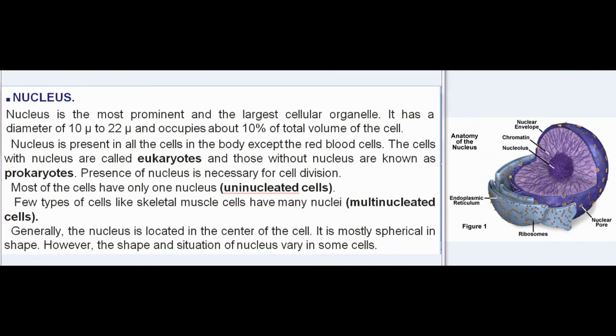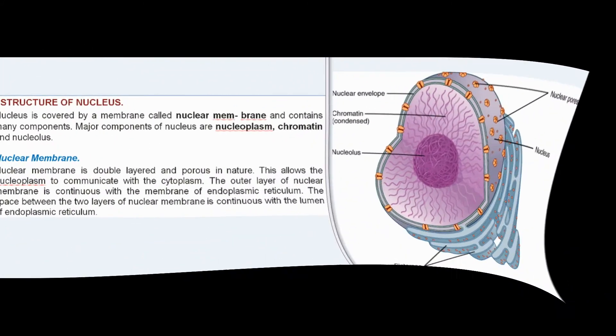Nucleus is the most prominent and largest cellular organelle, with a diameter of 10 to 22 μm, occupying about 10% of total cell volume. It is present in all cells except red blood cells; cells with a nucleus are called eukaryotes and those without are prokaryotes. Presence of the nucleus is necessary for cell division. Most cells have only one nucleus (uninucleated), while some like skeletal muscle cells have many nuclei (multinucleated). The nucleus is generally located at the center of the cell and is mostly spherical in shape.